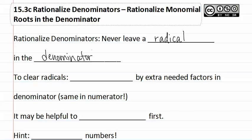To rationalize denominators or in a sense to clear the radicals from the denominators, we are going to multiply by the extra factors that are needed in the denominator. We also multiply these same ones in the numerator.